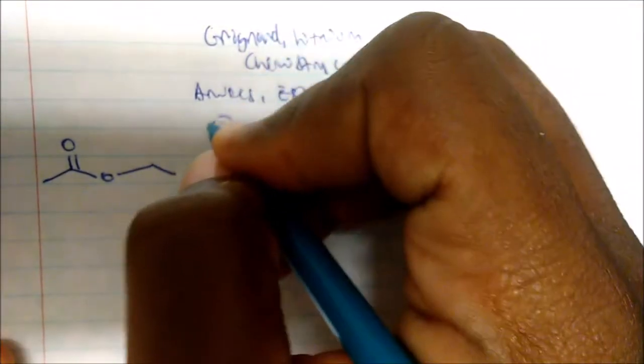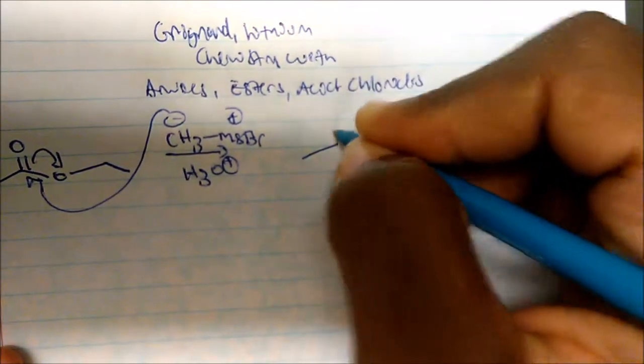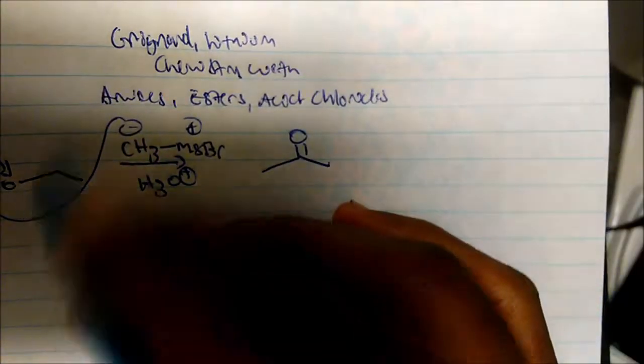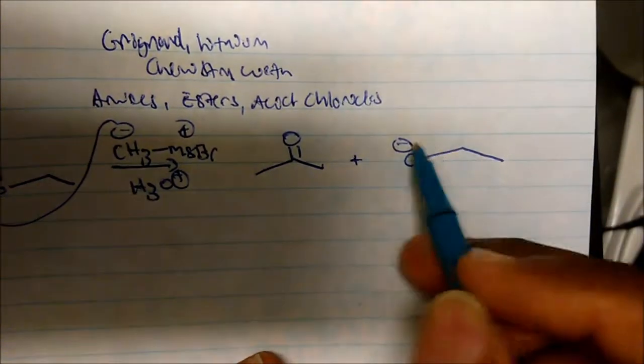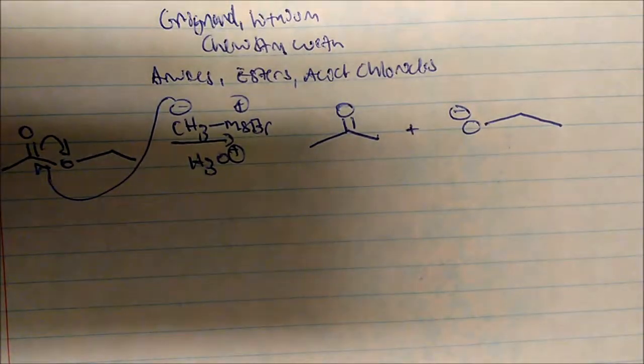If I have a simple ester and I add methyl magnesium bromide, and we do an acid workup — we know the Grignard carbon is negatively charged, so it's going to attack and displace the leaving group. We now have a carbon bonded to a CH3, and the oxygen that's generated is negatively charged, which will gain protonation to give an alcohol — but this is not the major product.